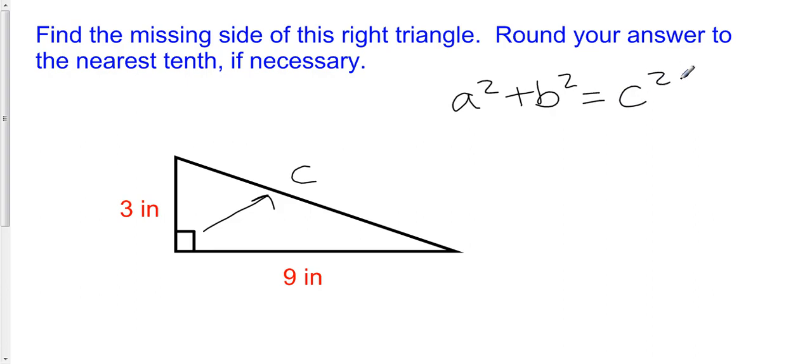If I plug in the numbers that are given, I have 3 squared plus 9 squared is equal to C squared. 3 squared is 9. 9 squared is 81. So that's going to be equal to C squared.